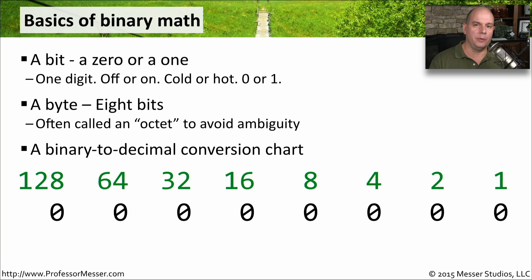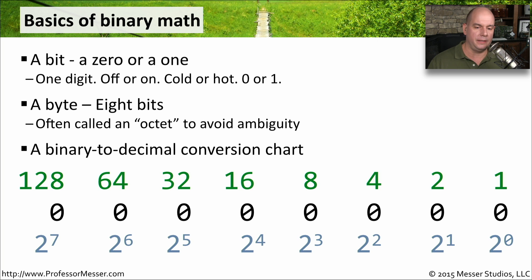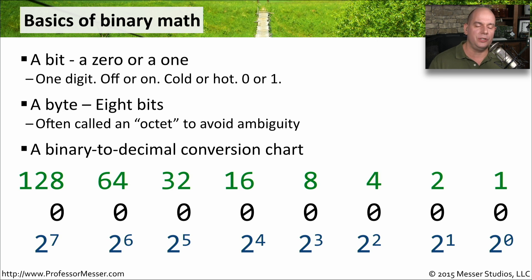With just this chart, you'll be able to perform all of the calculations we need in this video. If you wanted to look at it from a different perspective, we can look at it from a base two perspective: two to the zero power is one, two to the first power is two, two to the second power is four, and so forth. When you start performing a lot of IPv4 calculations and subnetting, you'll find it may be easier to think in base two. But in either case, you now have a conversion chart to use.